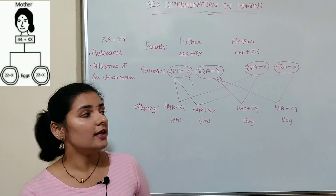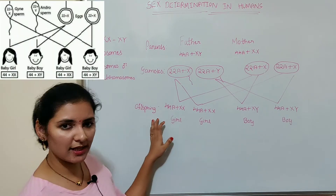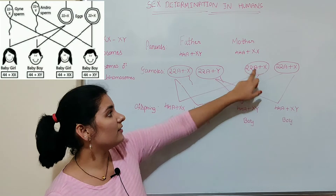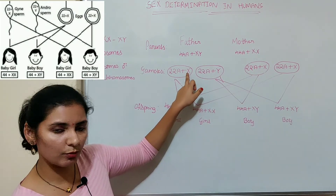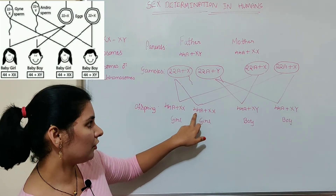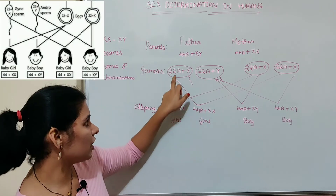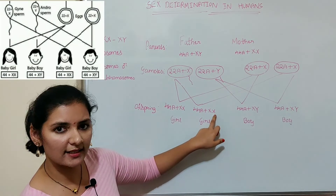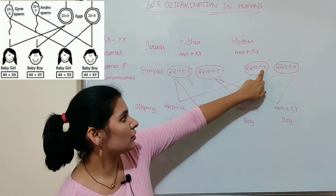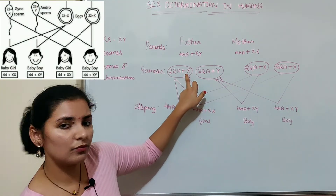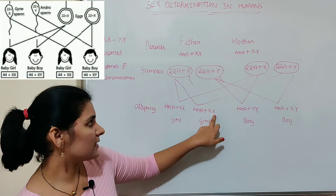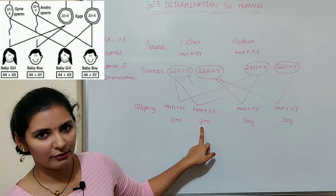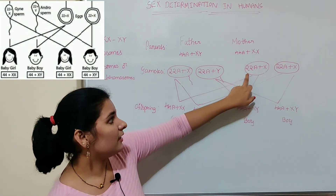In the next step — during fertilization — if the egg carrying X chromosome fertilizes with a sperm carrying X chromosome, then it produces 44 autosomes (22 plus 22) plus XX. This means it produces a female, so the zygote develops into a girl child or female individual.